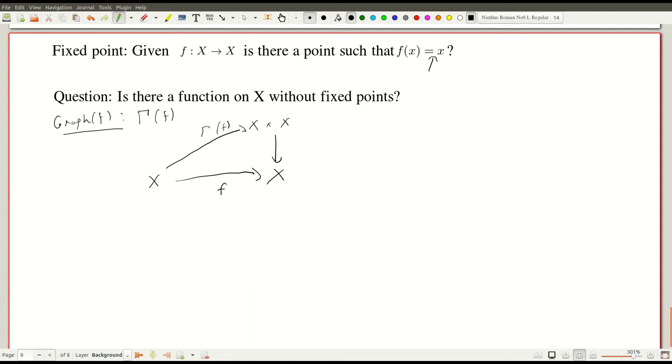Now in general, the graph of the function maps a point x to the point x comma f of x. And the property that it is a graph precisely says that if I project it to the second coordinate, then we will get f of x.